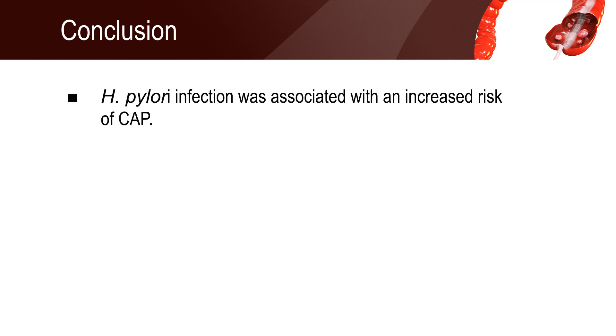Based on the study results, it was concluded that Helicobacter pylori infection was associated with an increased risk of colorectal adenomatous polyps.